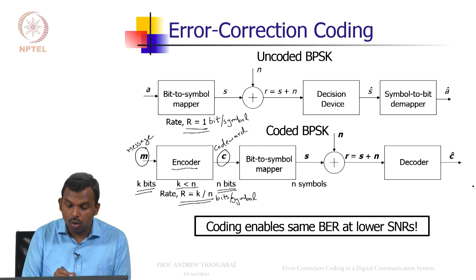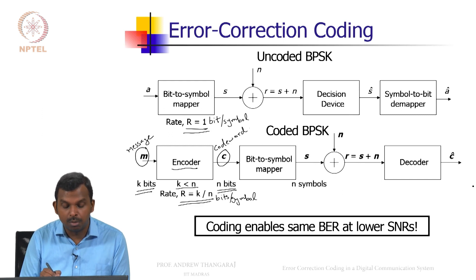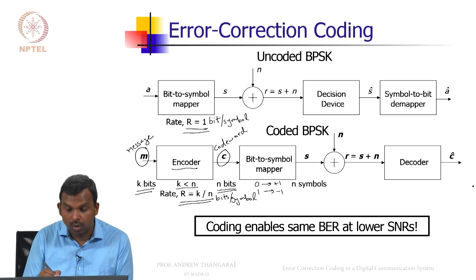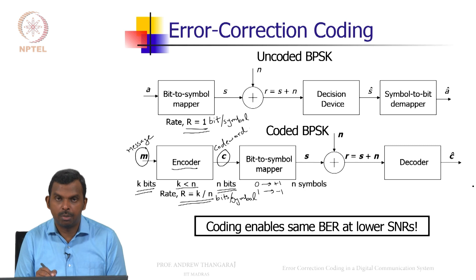Once you convert it into a codeword, what happens after that is similar to the uncoded BPSK case. You do a bit to symbol mapper and you get N symbols. How does the bit to symbol mapper work? 0 goes to plus 1, 1 goes to minus 1. There is nothing different about the bit to symbol mapper than the encoded BPSK case. You get a symbol vector S.